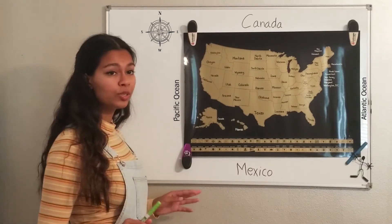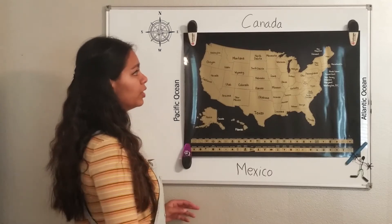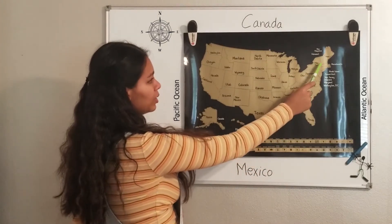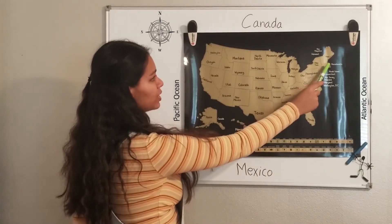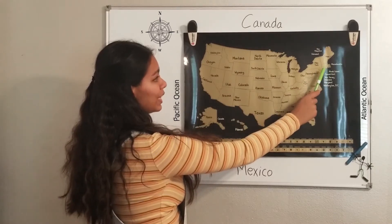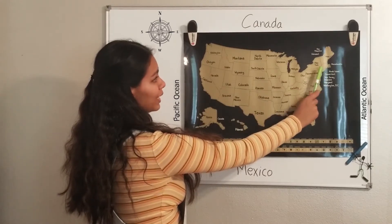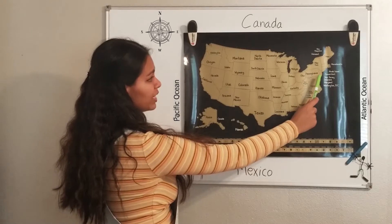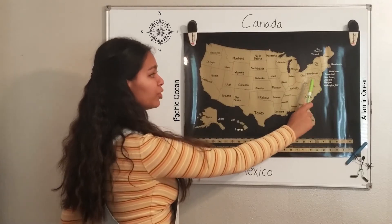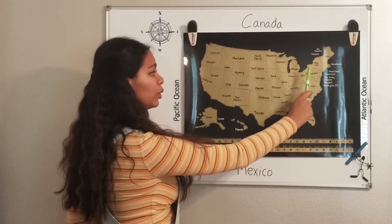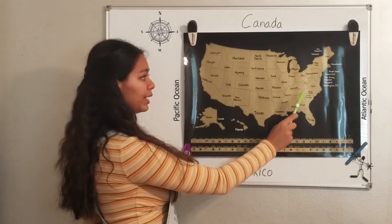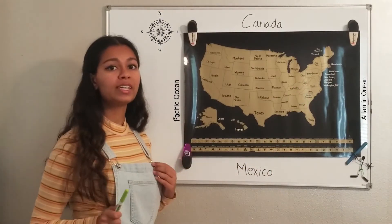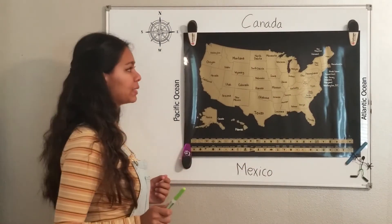The 13 original colonies were New Hampshire, New York, Massachusetts, Rhode Island, Delaware, Connecticut, Pennsylvania, New Jersey, Maryland, Virginia, North Carolina, South Carolina, and Georgia. Those were the 13 original colonies.